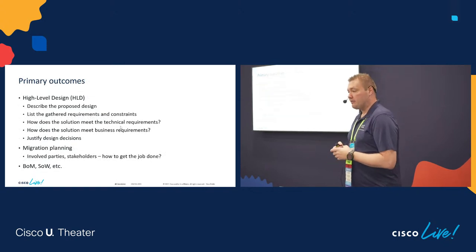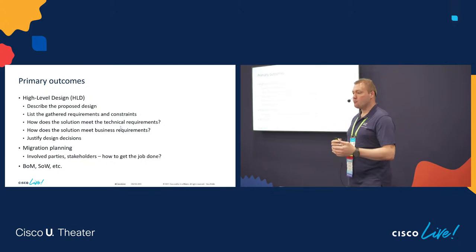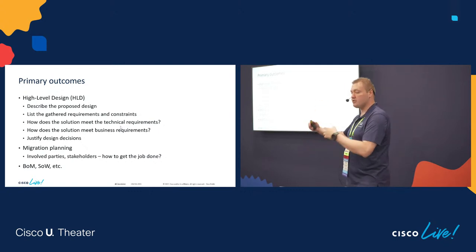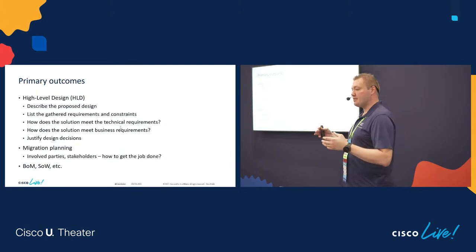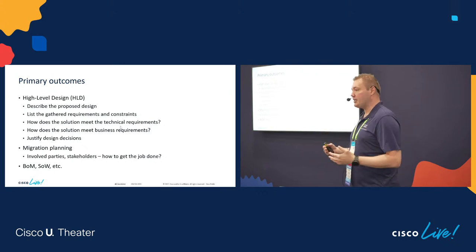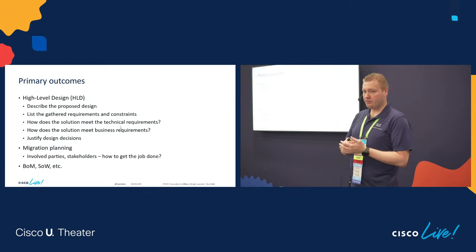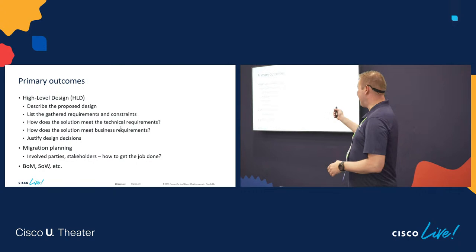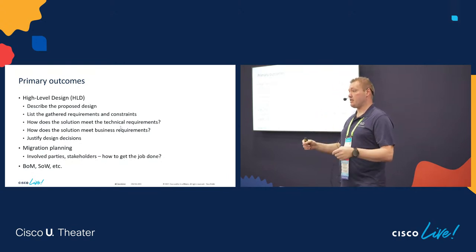What you typically do is build a high-level design containing a proposed design based on a documented list of criteria for your decisions. At least it's documented — these are the reasons I made this design because of these requirements, constraints, and goals. You also tell them how you meet their requirements with the design, and how it supports their business and organization. That's the real value to the customer. Any decision you make — choice of routing protocol, choice of technology — you must be able to justify it.